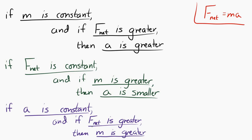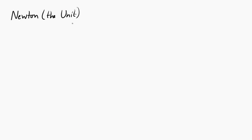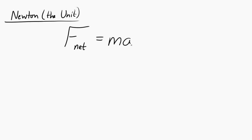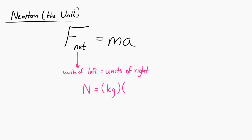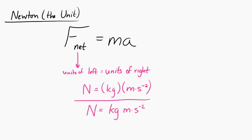Another cool thing about Newton's second law is that it shows us where the unit of Newton comes from. Because if you look at the second law, F net equals MA, the units on the left have to equal the units on the right. The units of force are Newtons, the units of mass are kilograms, and the units of acceleration are meters per second squared. That's where we get the idea that a Newton is equal to a kilogram meter per second squared.